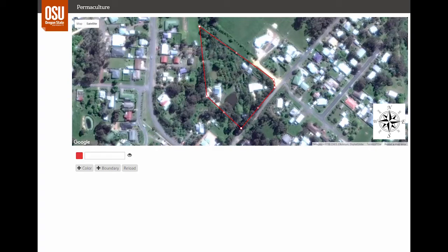We're going to look at the method of design using zones and sectors by studying Meliodora, the home and permaculture site developed by permaculture's co-founder David Holmgren. It's located in Hepburn Springs, Australia. David wrote an entire book about the design and development of his site, so we have lots of information, and there's a link to it on the Design Methods resource page.